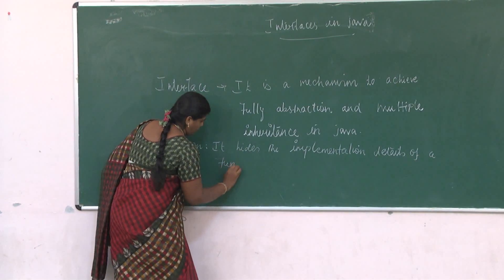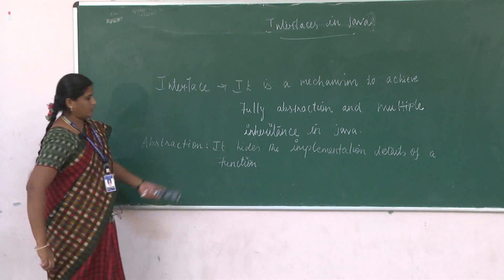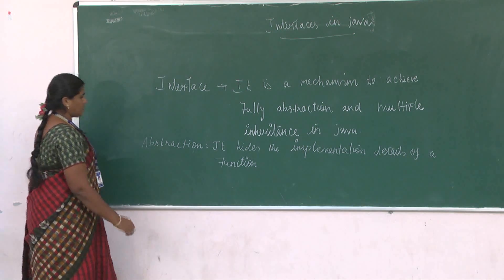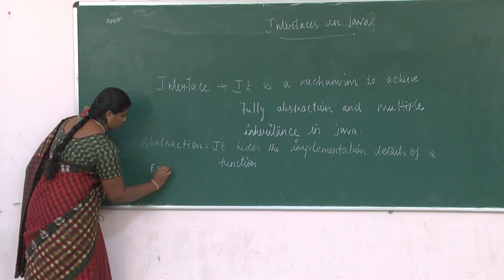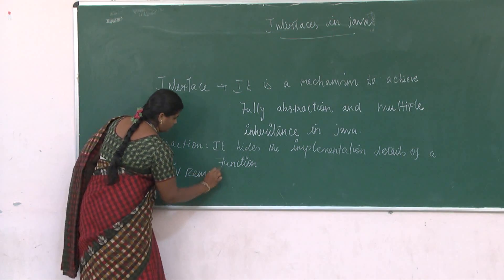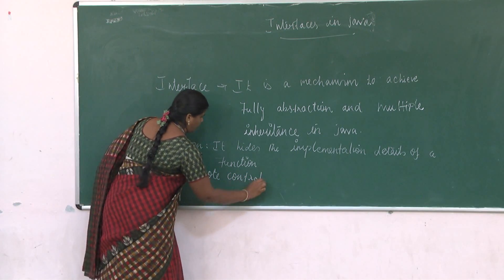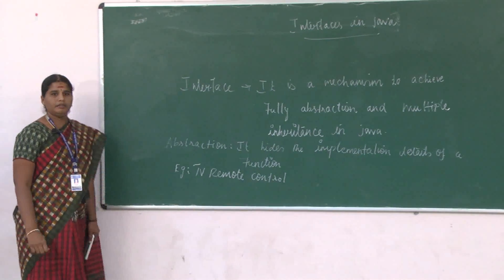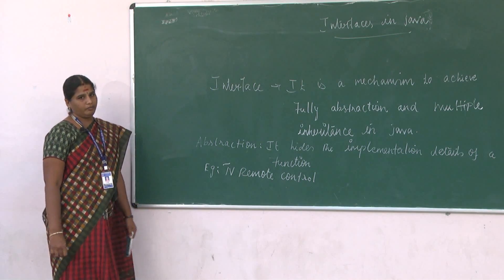Abstraction only shows the characteristics and behavior of functions. The best example for abstraction is a TV remote control. In a TV remote control, the user only knows how to use the functions of the remote control. They do not know about how it works.